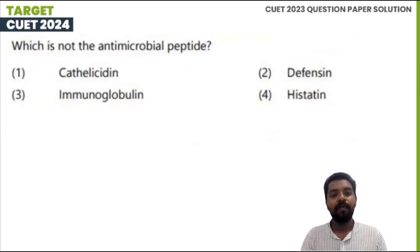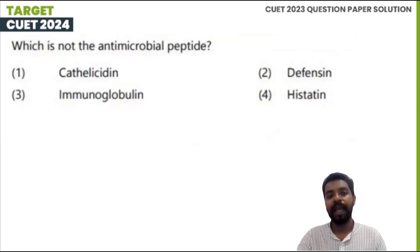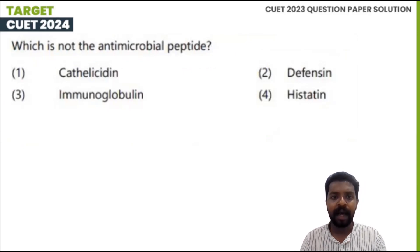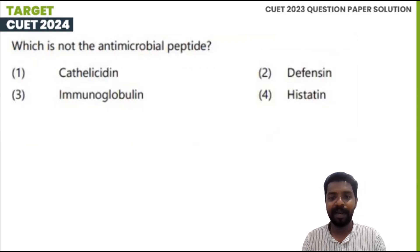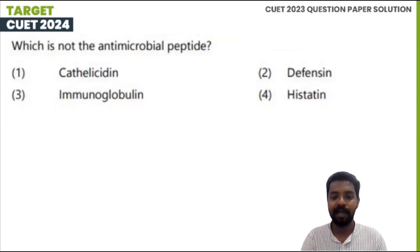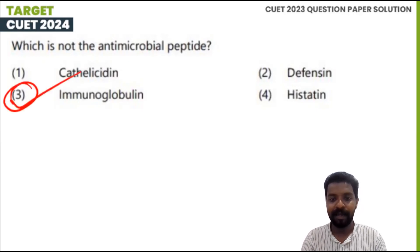Which of the following is not an antimicrobial peptide? The options are: cathelicidin, defensin, immunoglobulin, and histatins. Immunoglobulin is not classified as an antimicrobial peptide in the same category as the others.